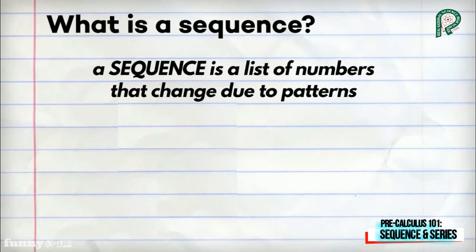Moreover, the book definition of a mathematical sequence is a list of numbers that change due to common differences or ratios in particular.